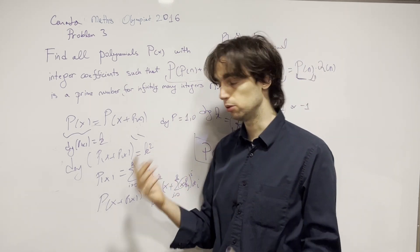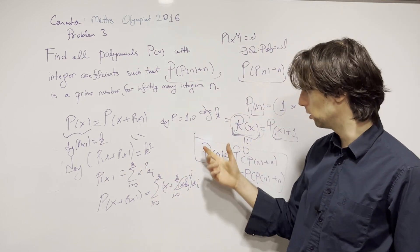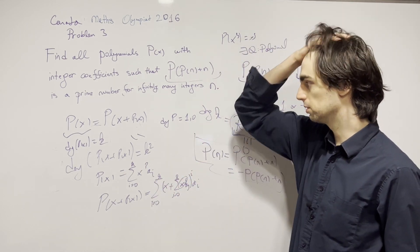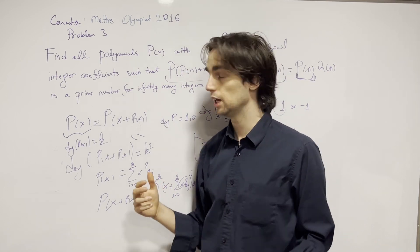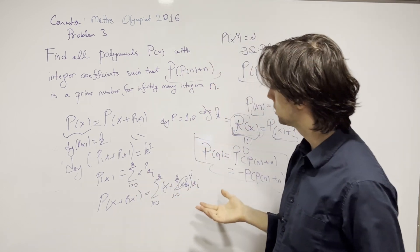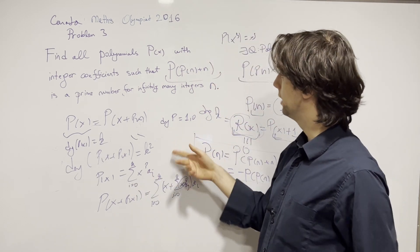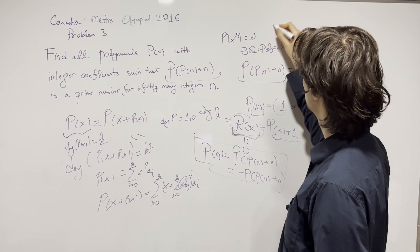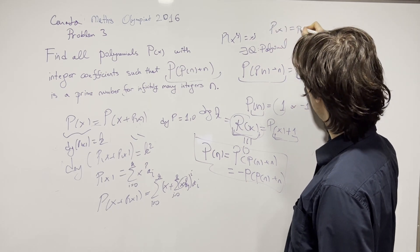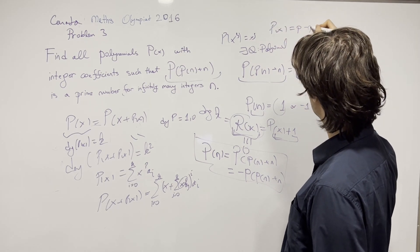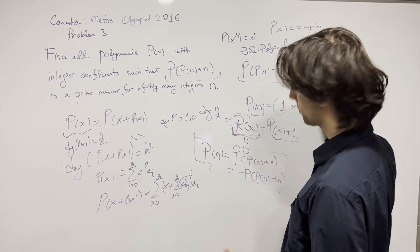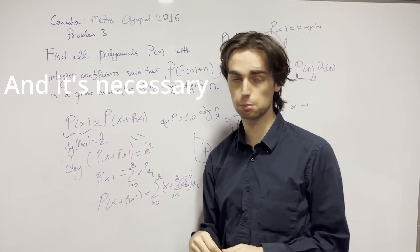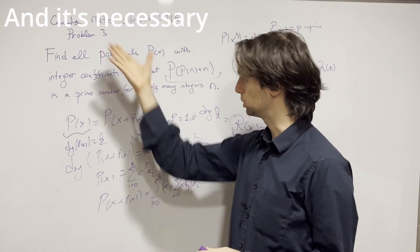Now we have two cases. If the degree is 0, then the polynomial is a constant, and if it equals any prime p, then P(x) = p satisfies the conditions of the problem. So any constant prime polynomial is a solution.